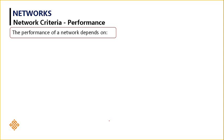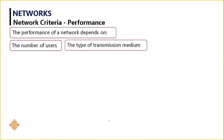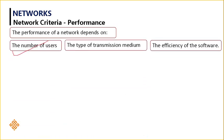In simple terms, the time taken between the sender and the receiver to transmit the data should be very less, and the delay should also be less. Based on that, we can judge how good the network is. The performance of the network mainly depends upon three things: the number of users using the media, the type of transmission media being used - whether coaxial cable, twisted pair cable, or optical fiber cable - and the efficiency of the software installed in that communication channel.